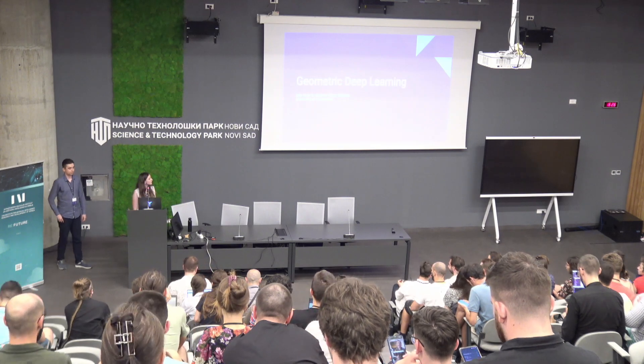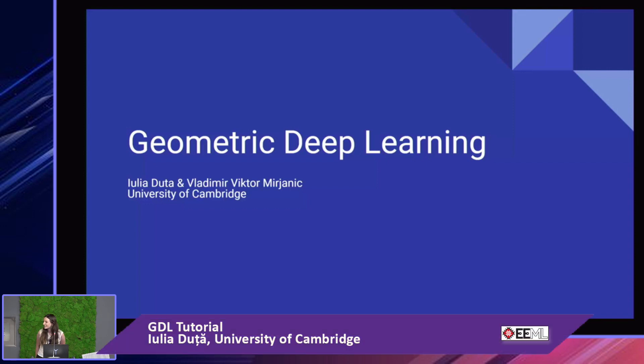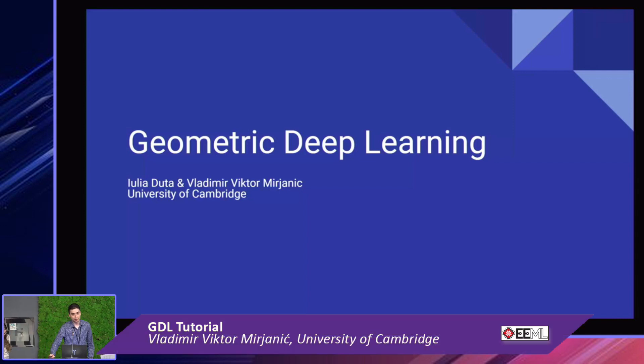My name is Iulia Dutza. I'm one of the authors for the Geometric Deep Learning Tutorial. I'm originally from Romania and currently doing a PhD, third year at the University of Cambridge, where I mostly work on hypergraph neural networks, which is on the same line with the tutorial. Hi everyone, I'm Victor. I'm from Belgrade, Serbia. I finished my undergrad last year at Cambridge and will be starting a PhD there this October.